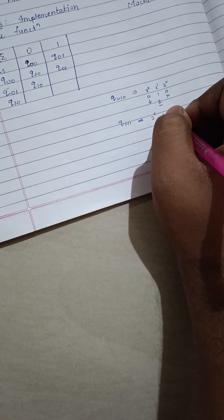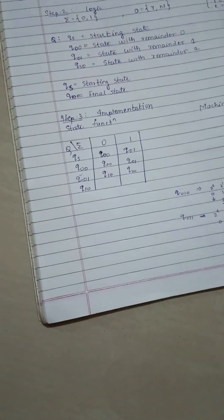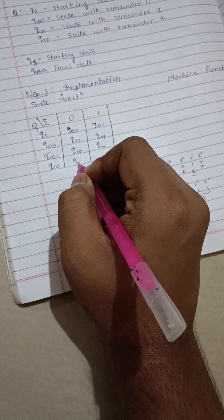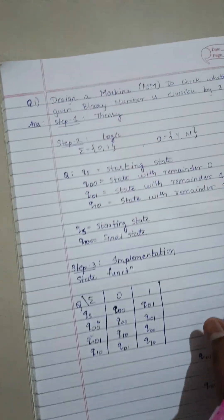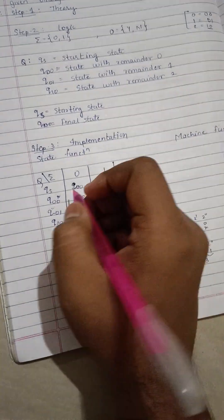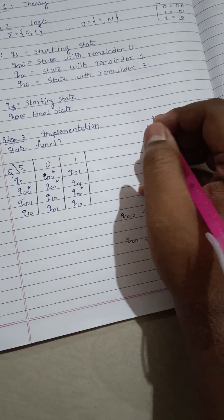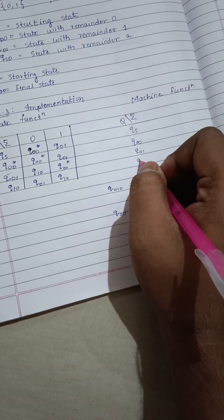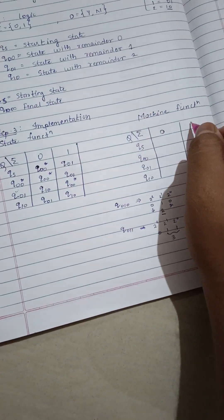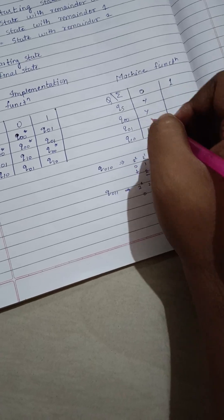If we pass 1 to Q01, it becomes binary 011 which is 3, and 3 divided by 3 gives remainder 0, so we write Q00. In the same way we perform this for all states - Q01 gives Q01, and Q10 gives Q10. Since Q00 is our final state for divisibility by 3, we mark it with a star or asterisk. The machine function table lists QS, Q00, Q01, Q10 with inputs 0 and 1.